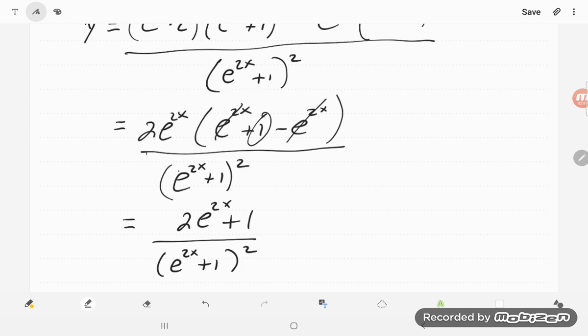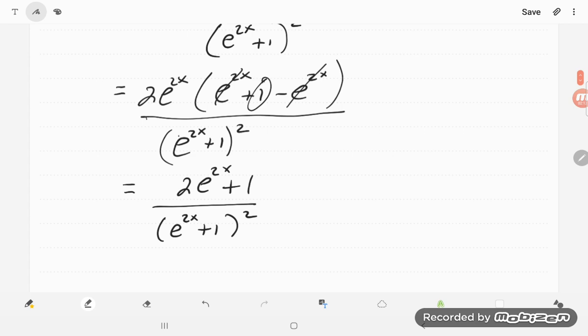You know, if that 2 hadn't been there, or if this 1 was a 2, we could have been able to simplify it even more. But that's where we get right there.